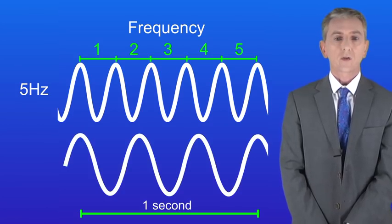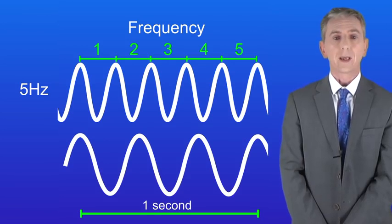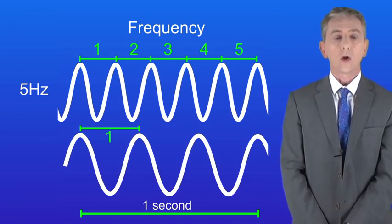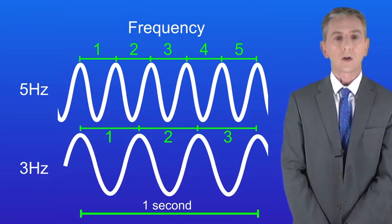Here's another wave and this one's got a longer wavelength. So again to work out the frequency we need to count the total number of waves. In this case we've got one, two and three waves in one second. So the frequency is three Hertz.